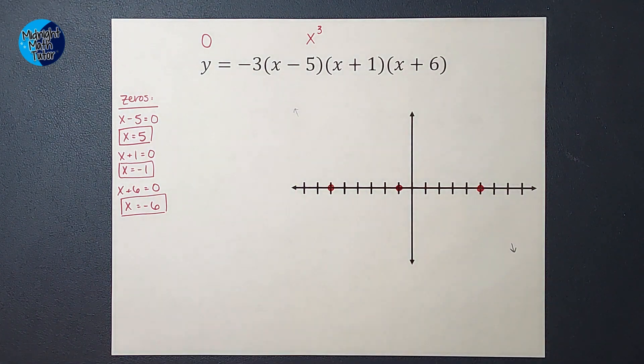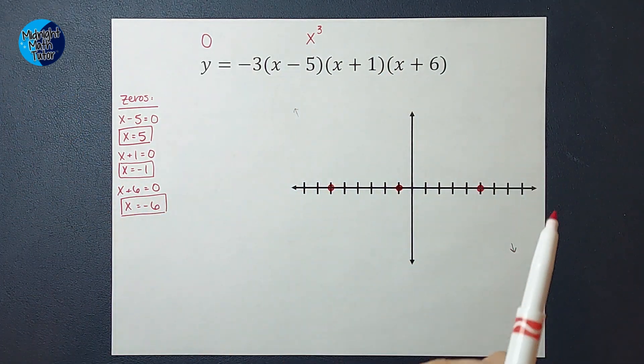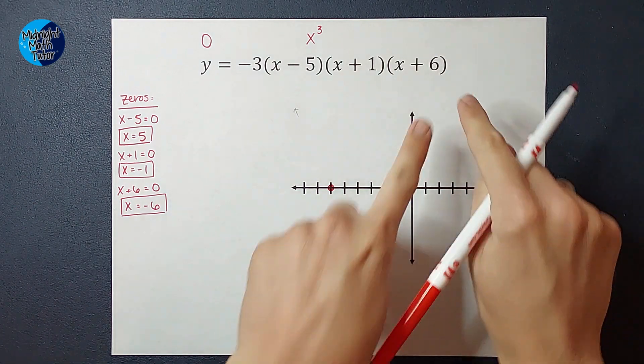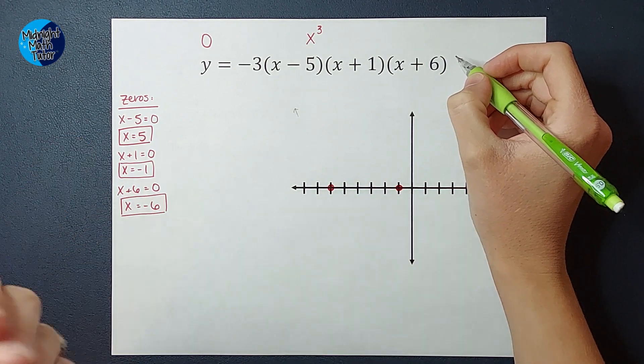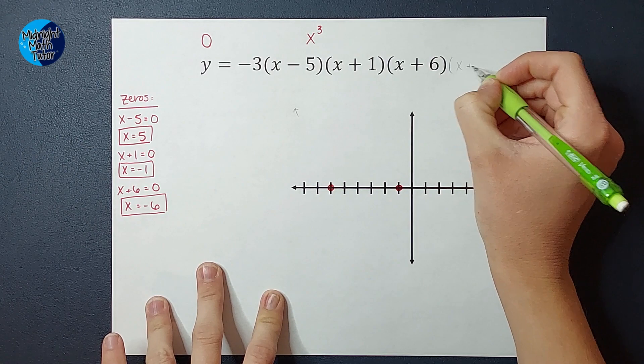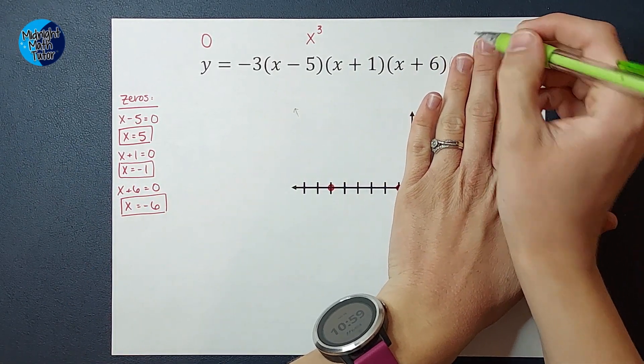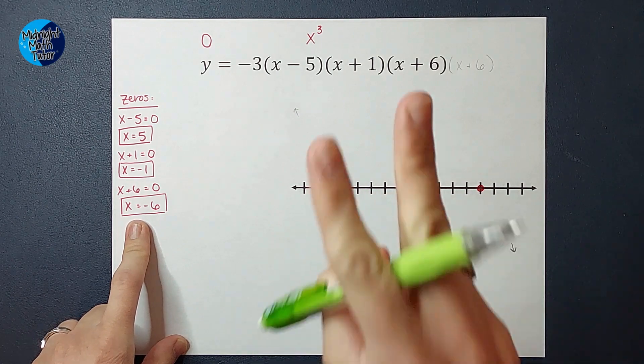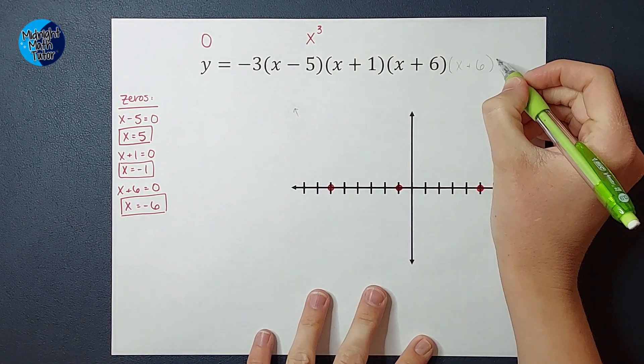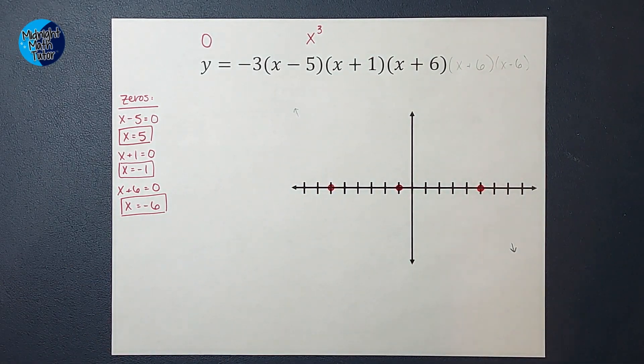Our third step is to look at multiplicities. So in this case, all of these have a multiplicity of one because there's only one of each. If on here—I'm going to do it in pencil again so you just know this is like a what if situation—if I had another X plus six here, you could write it like that or just have a squared here. Right? If I had two of those, then this negative six would have a multiplicity of two. And if I had another one, pretend I had X plus six times three times, then it would have a multiplicity of three.